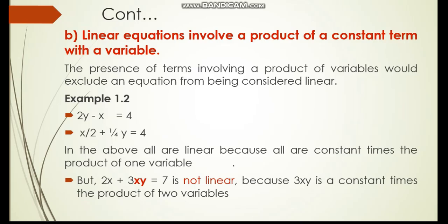Example 1.2, 2y minus x squared equals 4 is linear. Why? Because there is no product of variables here. x over 2 plus 1 over 4, y equals 4 is linear equation. Again, there is no product of variables here. But, 2x plus 3xy equals to 7 is not linear. Why? Because there is a product of variables multiplied here.